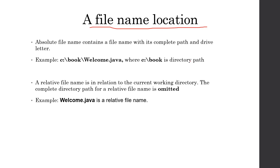We have two ways to specify the location of a file. The first is the absolute file name, where we write the complete path to the file. For example, if we want to read data from our local storage, we write the full path. Let's say we have a file called welcome.java located in a folder called book, and book is located on drive C. Here we specify the full path to get access to that file.